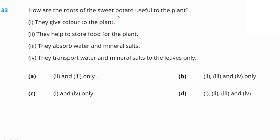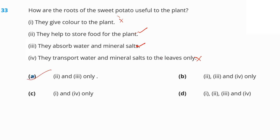How are the roots of the sweet potato useful to the plant? They store food for the plant — yes. They absorb water and minerals from the soil — yes. They transfer water and minerals not only to the leaves but also to branches, flowers, and other parts. Statements 2 and 3 are correct, so option A is the right answer.